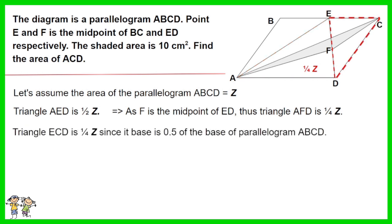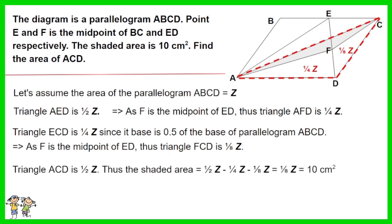Triangle ECD equals one quarter Z since its base is 0.5 of the base of parallelogram ABCD. As F is the midpoint of ED, triangle FCD equals one eighth Z. Triangle ACD is half Z. Thus the shaded area equals half Z minus one quarter Z minus one eighth Z, which equals one eighth Z.